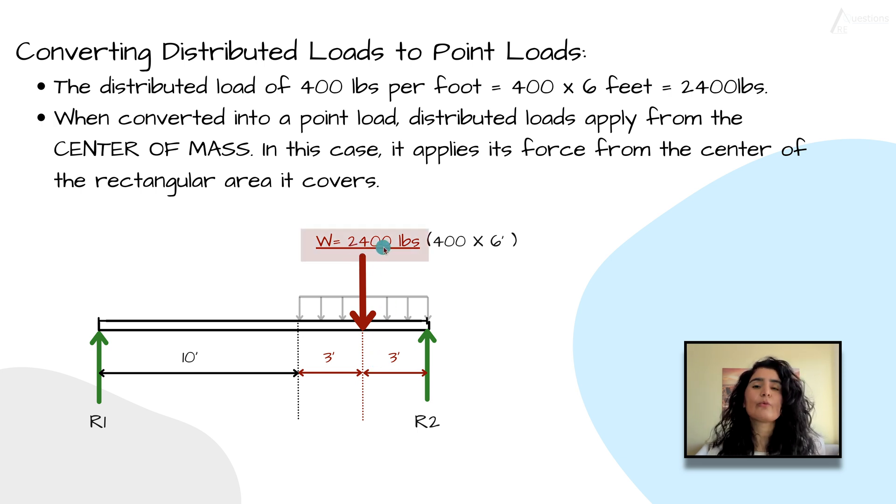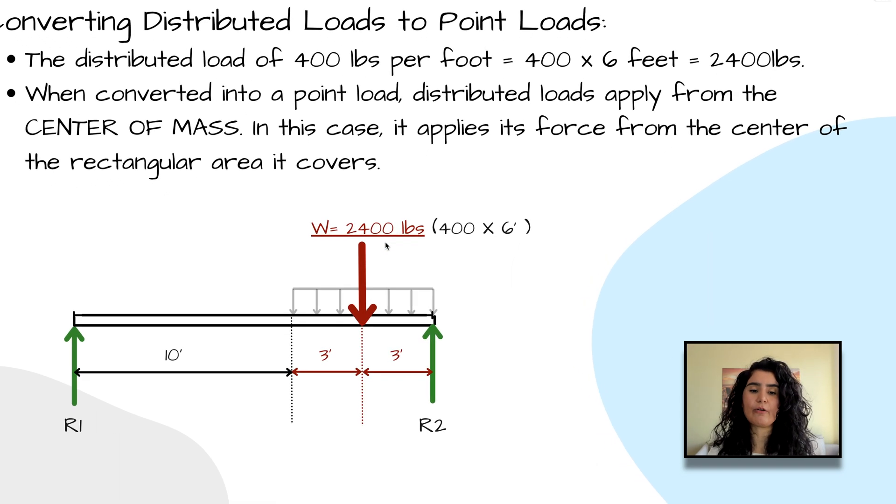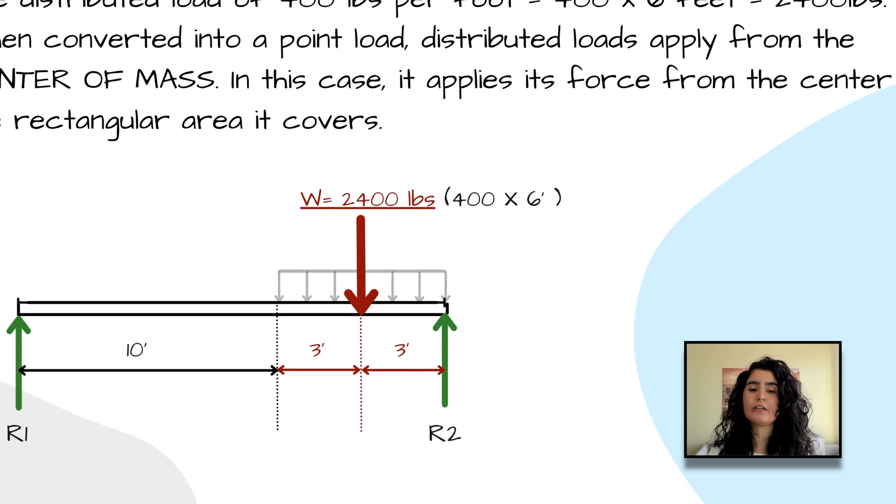When you are converting distributed loads to point loads, that total load that you just found, 2,400, applies from the center of that length. What is the center of six feet? It's three feet, right? Three feet and three feet. That's why we now have a big red arrow pointing down with 2,400 pounds, and it lies from the center.